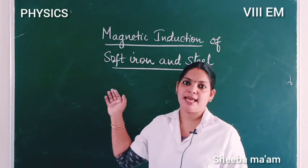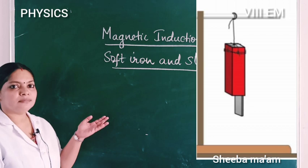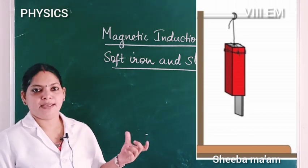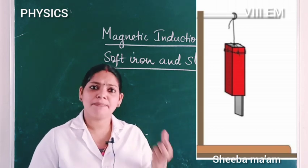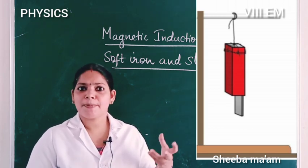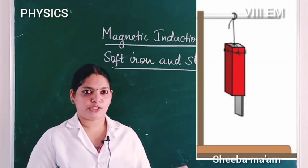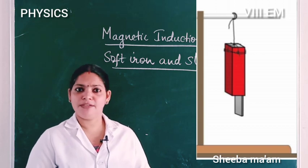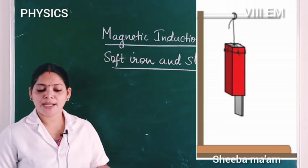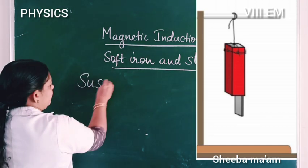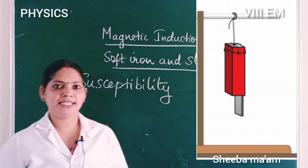Next topic: magnetic induction of soft iron and steel. Look at this figure — 10 to 12 pins of soft iron attract in the presence of a magnet. Soft iron gets more magnetic induction; it is easily subjected to magnetic induction in the presence of a magnet. We call this property susceptibility.